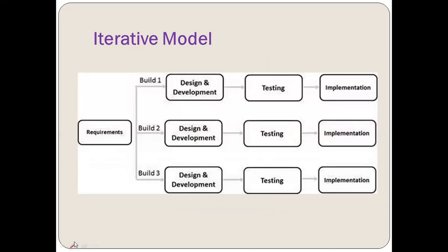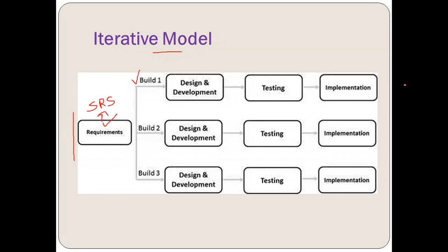This is the graphical representation of how the iterative model works. First we have the requirements phase, where all requirements are analyzed and an SRS — Software Requirement Specification — is developed. On the basis of this SRS, we build the project in iterations. Build one is released after design, development, testing, and implementation. Then build two is defined, goes through the same phases, and is released, and so on. The number of iterations depends on the type and size of the project.